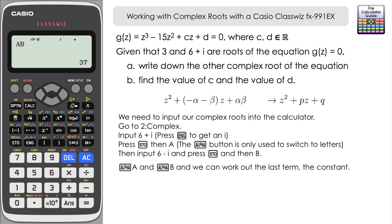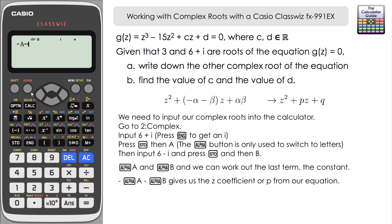Now for the middle term: the coefficient of the Z term is minus alpha minus beta, so we compute minus A minus B and press equals. The answer is negative 12. So P equals negative 12, the coefficient in front of the Z term.